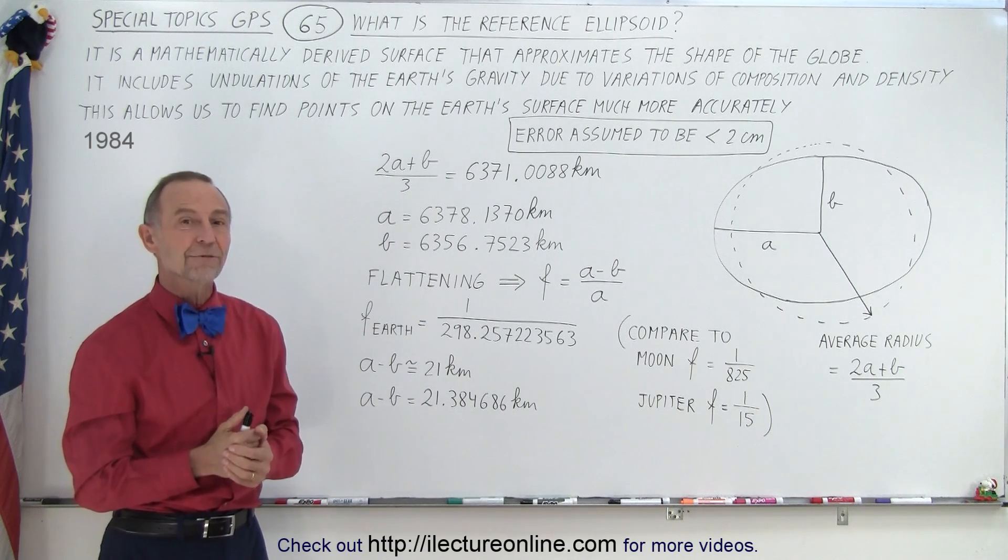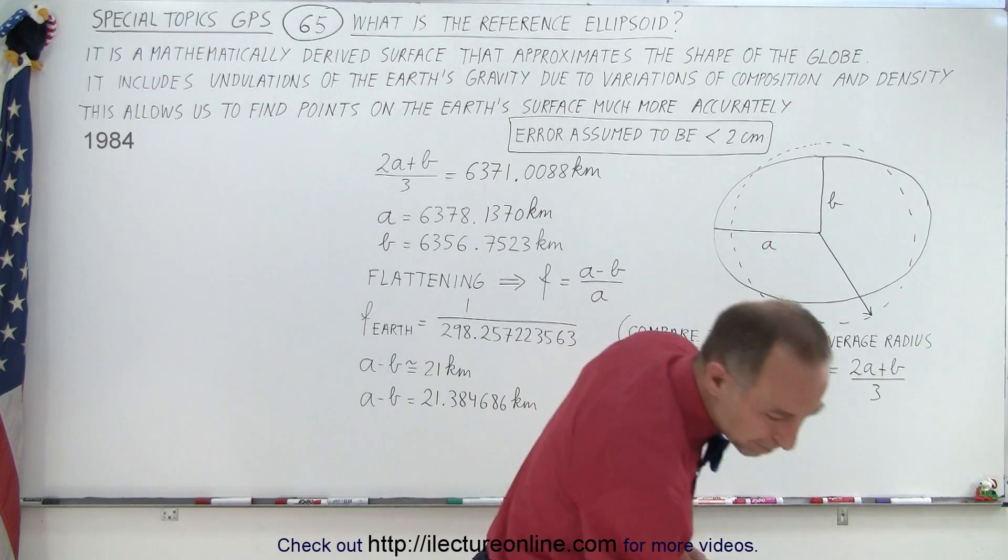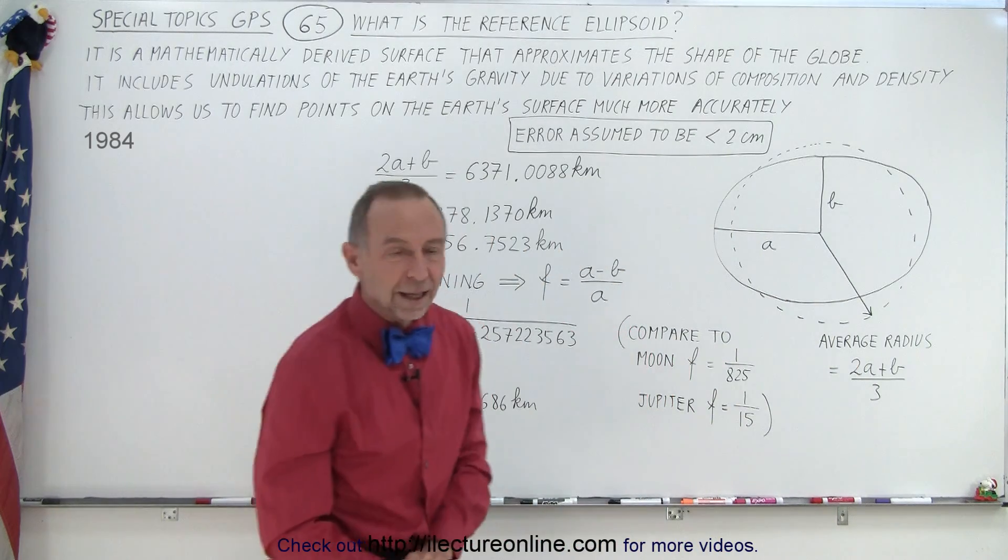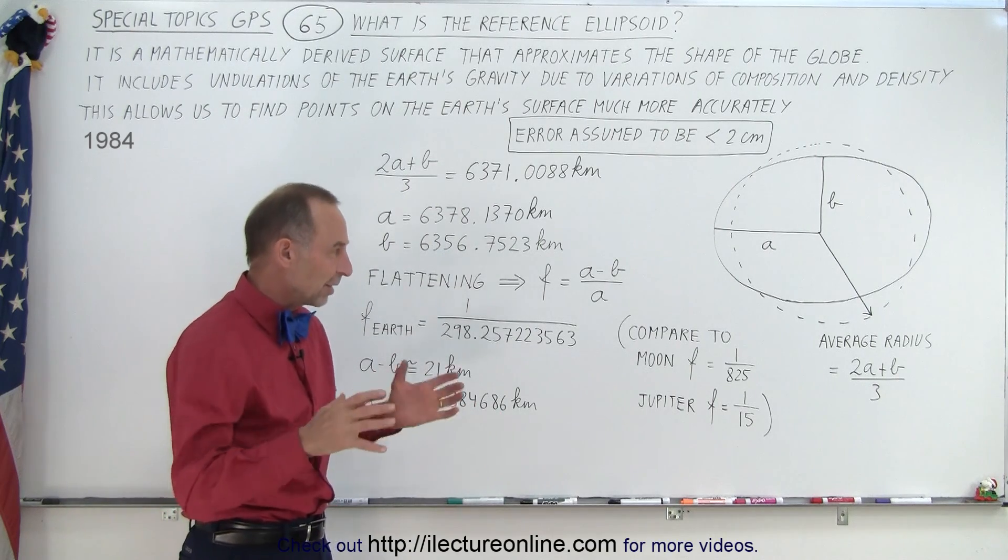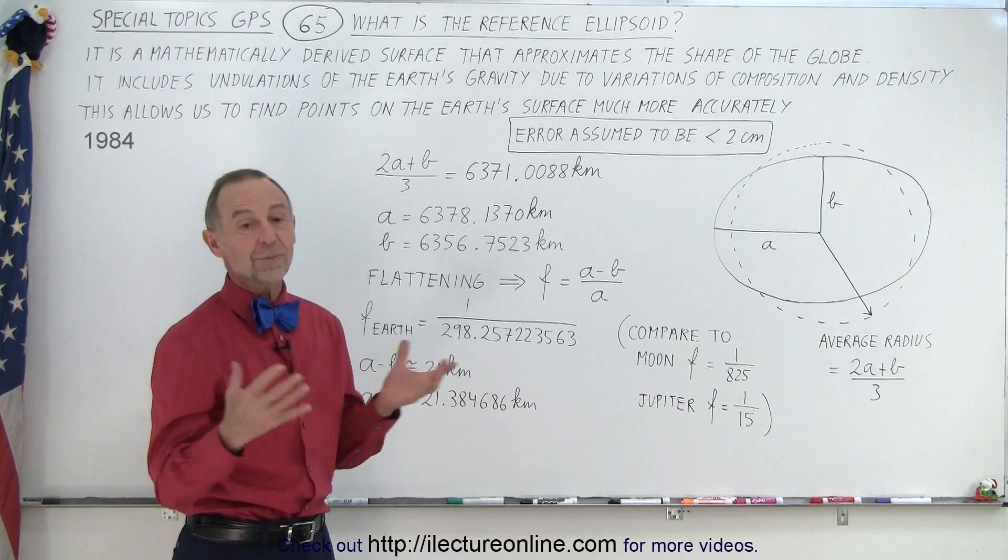And we'll talk more about that model in a different video. So the bigger the planet, the more ellipsoid it is? Yeah, the bigger the planet definitely has an effect on how ellipsoid it is. And also what it's made out of.